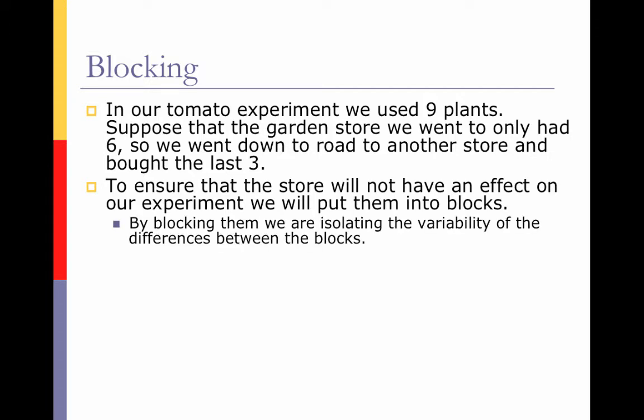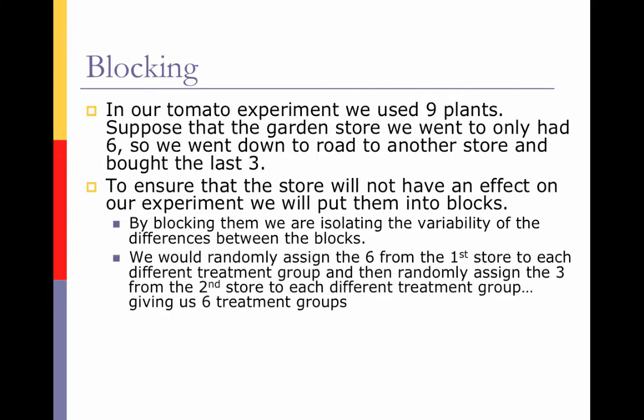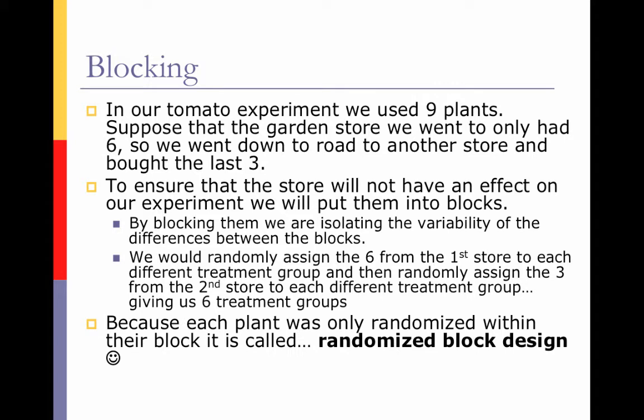So we're going to make the store that the plants came from the blocking variable. By blocking them, we are isolating the variability of the differences between the blocks. By isolating them, we can say that the store they came from will be evenly distributed instead of only affecting one particular treatment group. We would randomly assign the six from the first store to each different treatment group, giving us six treatment groups. Because each plant was only randomized within their block, this type of experiment is called a randomized block design.